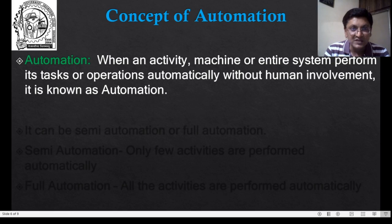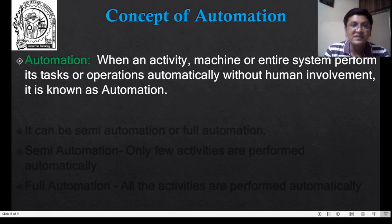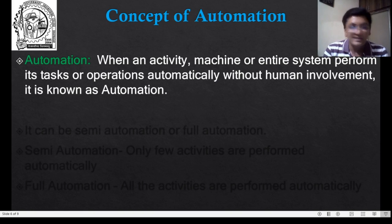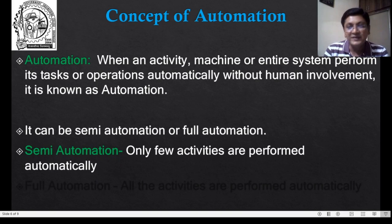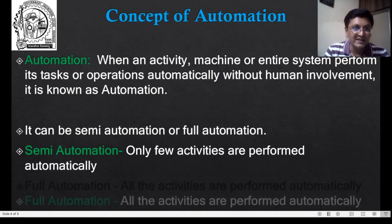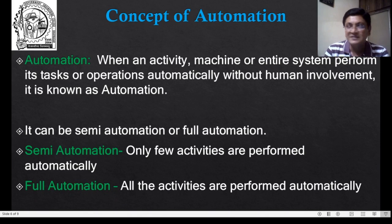The extent to which automation is incorporated — or the extent to which human involvement has been restricted — defines whether the automation system is of semi-automatic type or fully automatic type. When only a few activities are performed automatically, it is termed a semi-automatic system. When all activities are performed automatically, it is termed a fully automatic system.